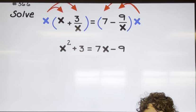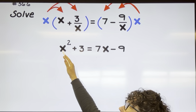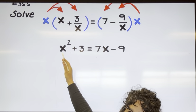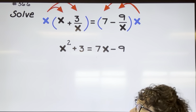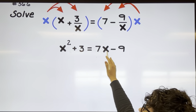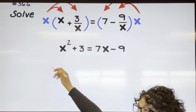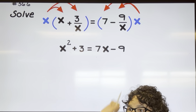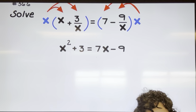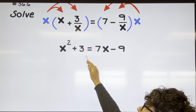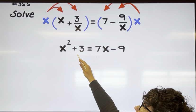Since I know I'm going to factor, I would really like the leading coefficient on X squared to be positive, which tells me I'm going to move these two terms to the left side — because if I moved X squared to the right side, I would have negative X squared. So let's subtract seven X.